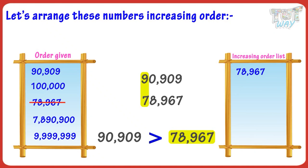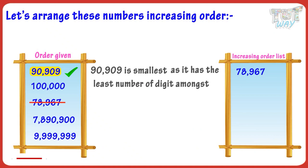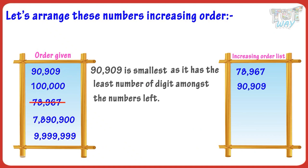Place 78,967 first and cross it from the list. Now 90,909 is the smallest among the numbers left, as it has the least number of digits, so place it in second place and cross it from the list too.